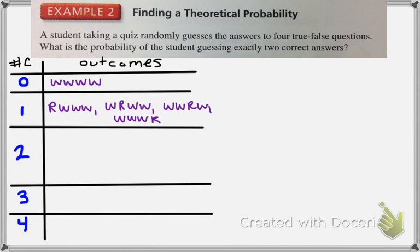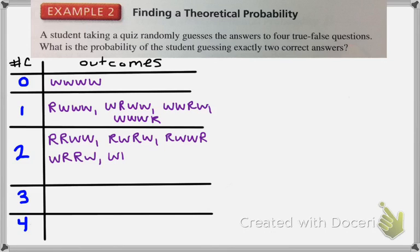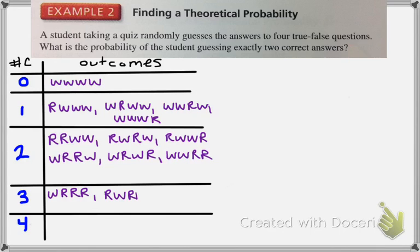There are even more ways the student could get two correct: first and second, first and third, first and last, second and third, second and last, and the last two. So there are six different ways the student could answer two correctly. If the student answers three correctly, that means one wrong — so it could be the first, second, third, or fourth one wrong. And there's only one way the student could get four correct, and that's if all four are right.